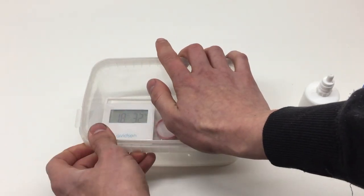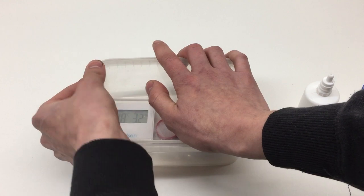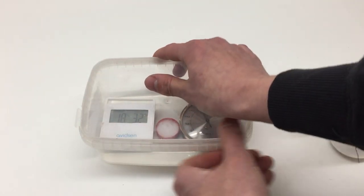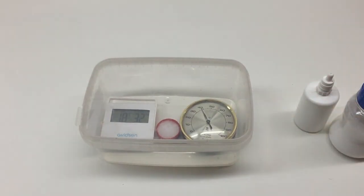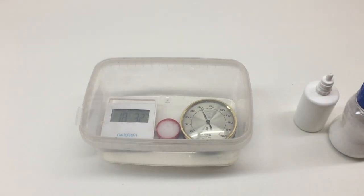Now we're going to leave it overnight or for 12 hours or so and hopefully when we come back the next day the reading on the hygrometers will be 75 percent. If they're not, we know that they are not accurate and they need to be adjusted.